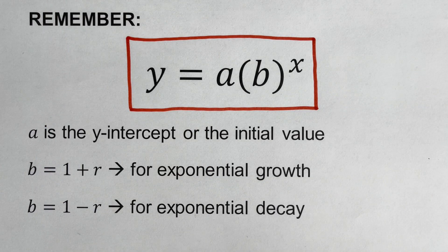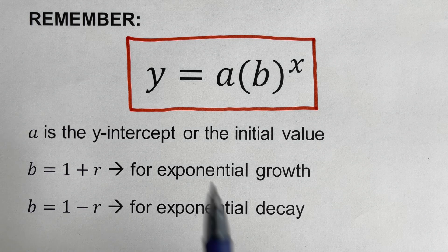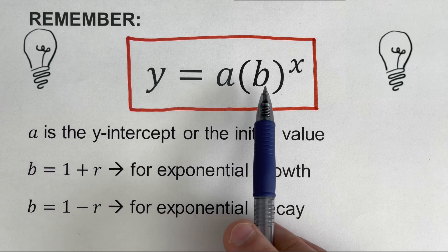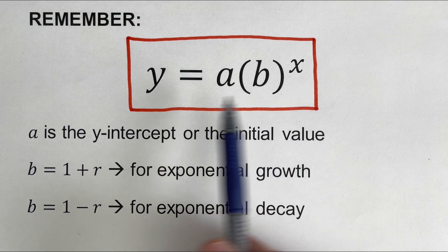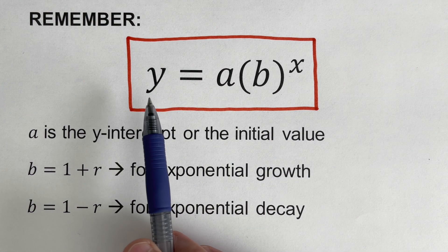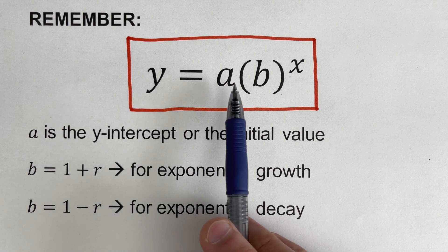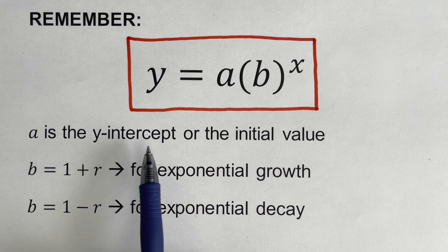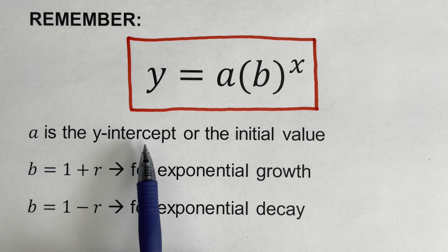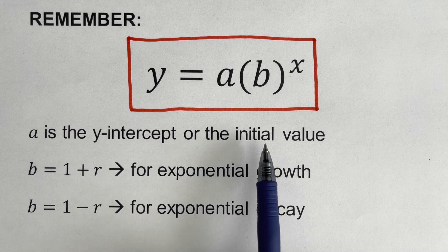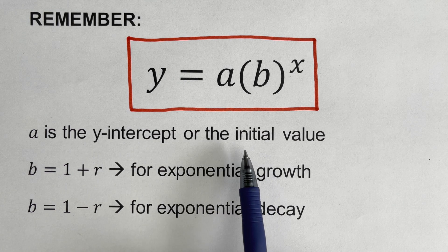The general formula for exponential growth or exponential decay is y equals a times b raised to the power x, where y refers to the final amount or the final value. Our a here is the y-intercept, which means this is the value of y when x is zero — pretty much this is the initial value or the initial amount.